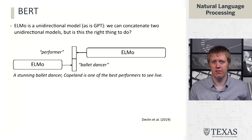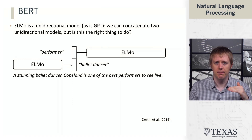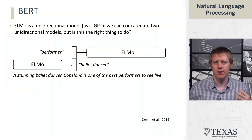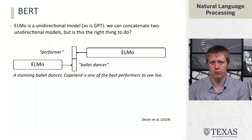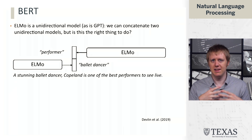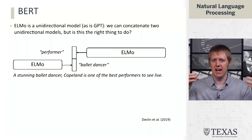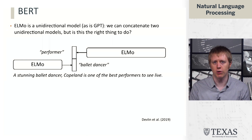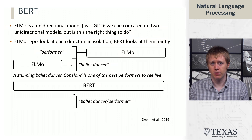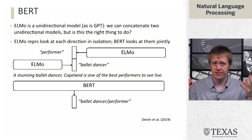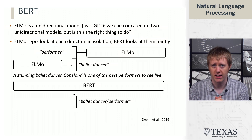The forward ELMo should tell us that Copeland is a ballet dancer and the backward ELMo should tell us that Copeland is a performer. These pieces of information are then stapled together into a single vector, but they're not deeply merged — we're just concatenating two independent views of what's going on in the rest of the sentence. BERT is going to do something different, where it's going to be able to look at the whole sentence and produce a vector that ideally captures both of these aspects.